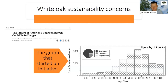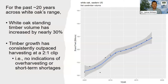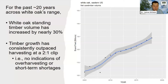That recognition has probably led to you seeing things come across your news feed about how things like bourbon barrels, which really depend on White Oak, could be a concern. The whole concern for White Oak is driven by recognition that we don't have enough young White Oak on the landscape. For the past 20 years or so, the standing timber volume has increased by nearly 30%, and timber growth has consistently outpaced what we remove from harvesting or trees that die. So right now, we have no indications of overharvesting or shortages in the short term.